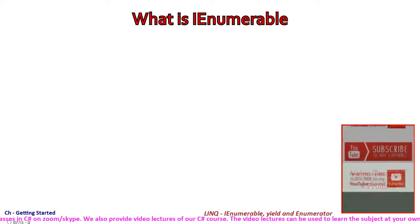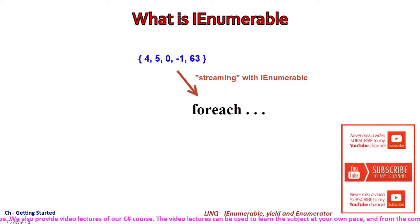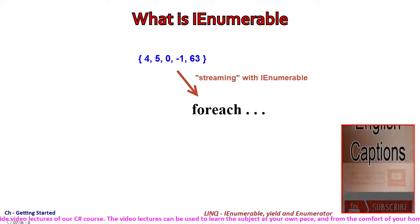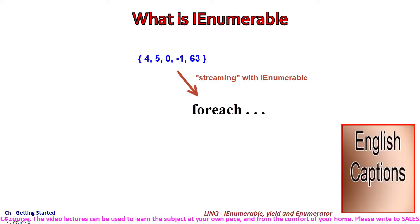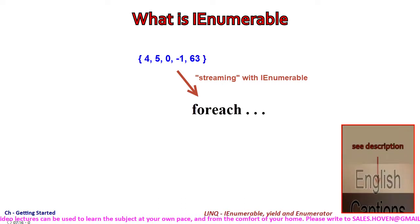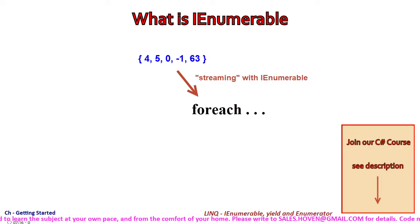The iEnumerable interface is implemented by collections and arrays. It signals the ability to provide its items one by one like a stream, and it supports a simple iteration by using a loop.